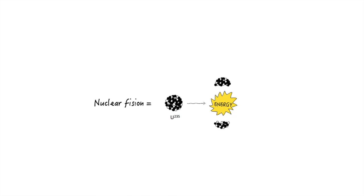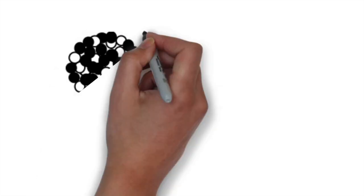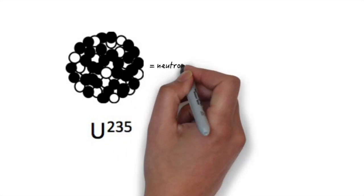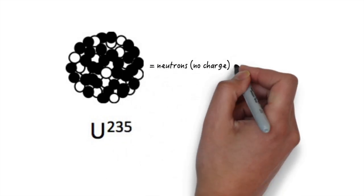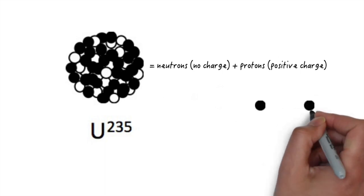Before I tell you why an atom splits, you'll need to know that the nucleus, or the center of the atom, is made up of protons and neutrons. Protons have a positive charge, and neutrons have no charge.